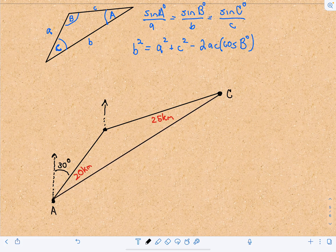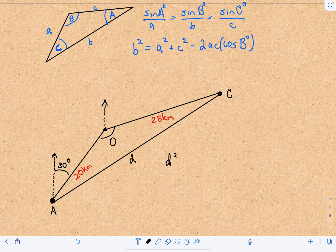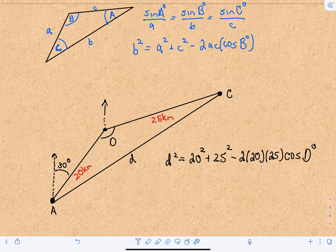In the first question we want to find the distance from A to C. I'll label this D for distance. If I knew this angle I would be able to use the Law of Cosines. If we call it angle D, the Law of Cosines says D squared equals the other two sides squared — 20 kilometers and 25 kilometers — added together, minus two times the product of those lengths times the cosine of the angle opposite side D.